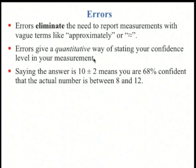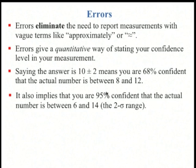Saying that your answer is 10 plus or minus 2 means that you are 68% confident that the actual number is somewhere between 8 and 12. It also implies that you're 95% confident that the actual number is somewhere between 6 and 14. This is plus or minus twice the error, so it's called the 2 sigma range.